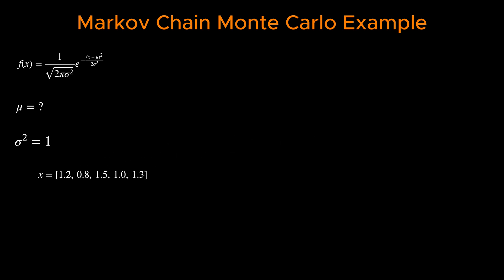Let's first write down our assumptions. We are told that the probability of a single data point given the parameter μ is a Gaussian function.